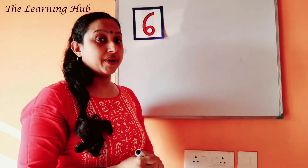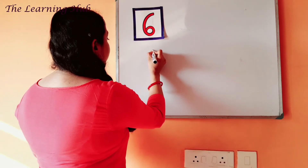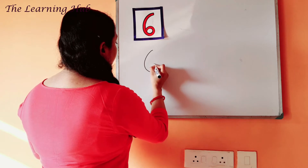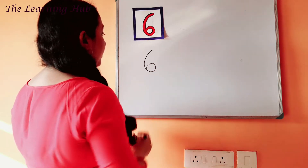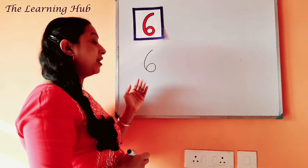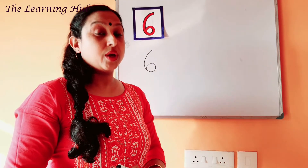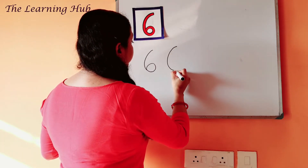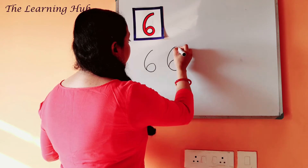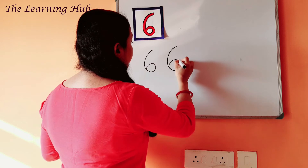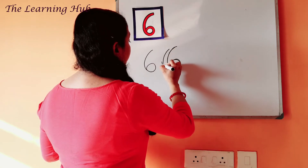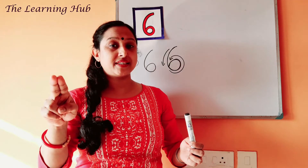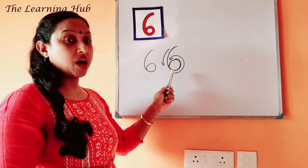Now look at the board — how to write number six. Start from the top, then draw a curve to the left side, then draw a small circle. So this is how we write number six. Now children, do the rhyme along with action: 'Make a curve then circling, make a curve then circling, to make the number six!' Yes, this is number six!